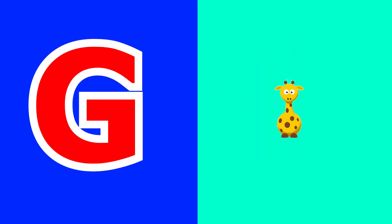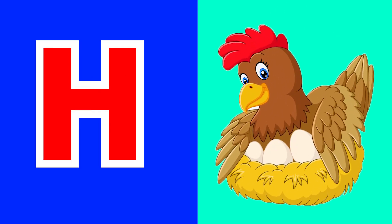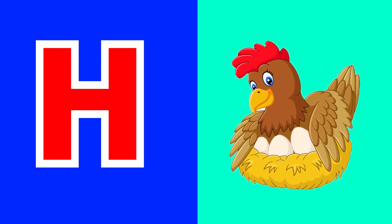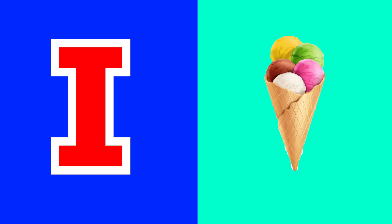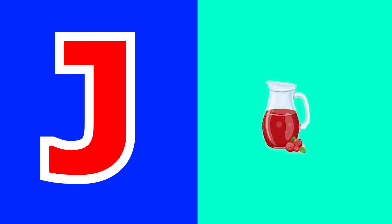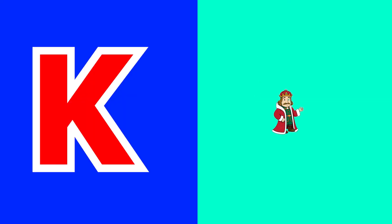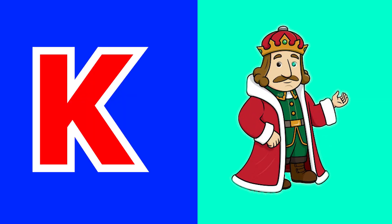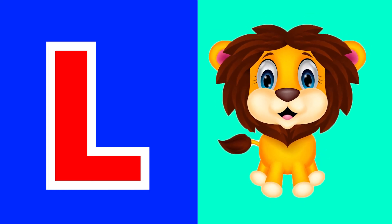G for giraffe, H for hen, I for ice cream, J for jag, K for king, L for lot.